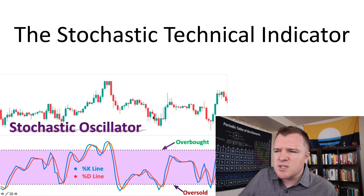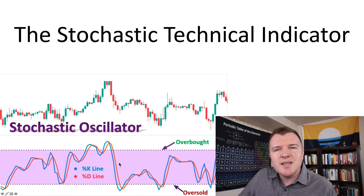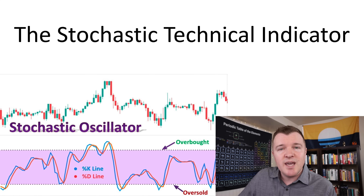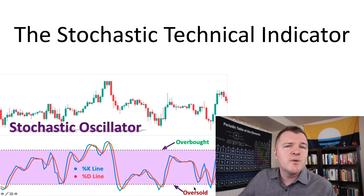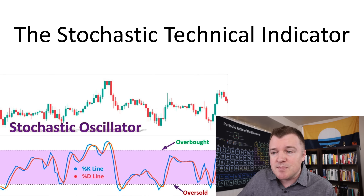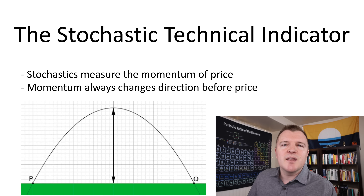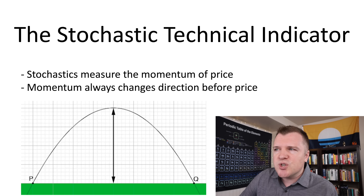This is what it looks like down here. There's basically two lines that parallel each other — it's the percent K line and the percent D line. There's an overbought range, an oversold range, and then what I refer to in the middle as the sweet spot. The stochastic technical indicator is supposed to measure the momentum of price.